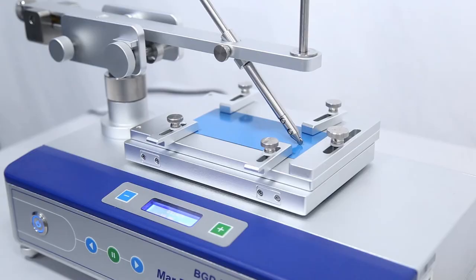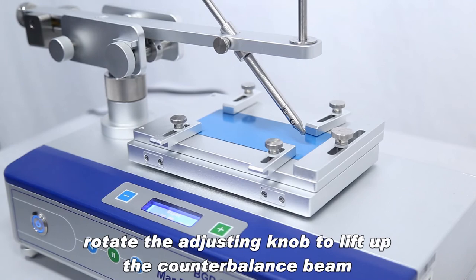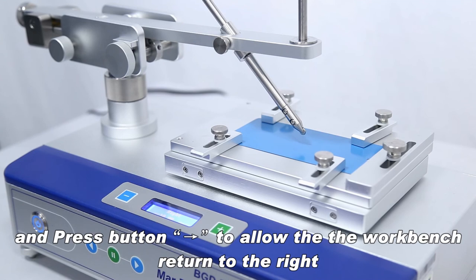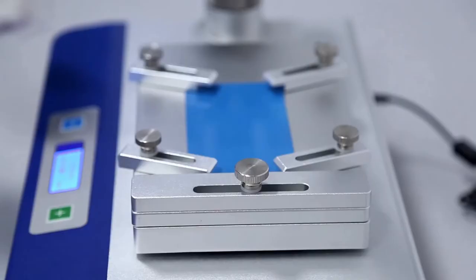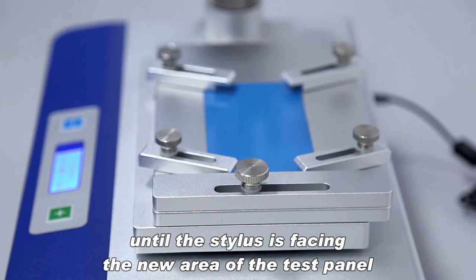Inspect the coating for scratching under a suitable magnification or with the naked eye. If you need to perform the scratch test at different position on the same test panel, rotate the adjusting knob to lift up the counterbalance beam and press button to allow the workbench return to the right. Loosen the fixed screw for holder on the right end of the workbench. Move the bench back and forth until the stylus is facing the new area of the test panel and do the scratch test again.